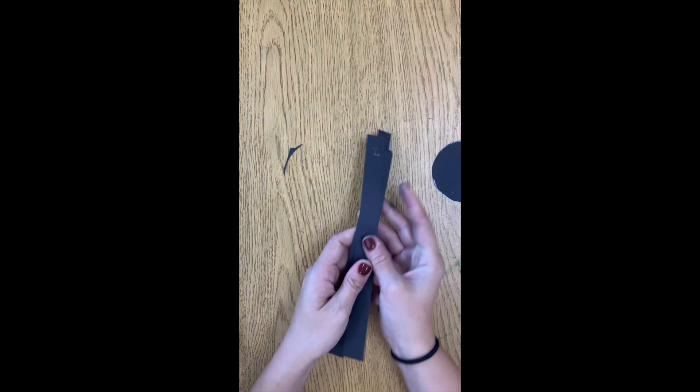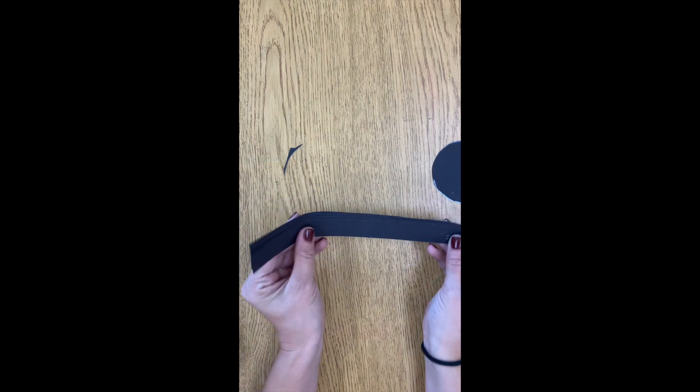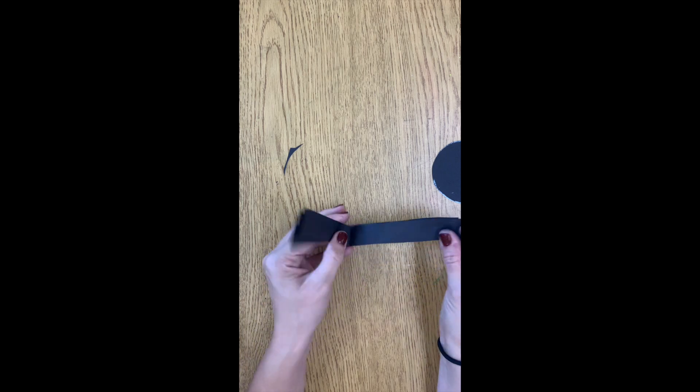Next, I am going to line them up, fold them in half, and then cut them in the middle. This way, I will have 8 legs for my spider.